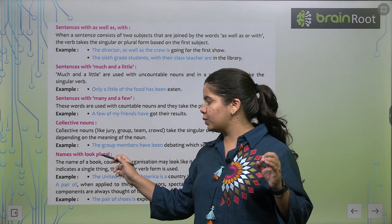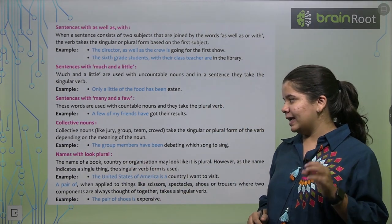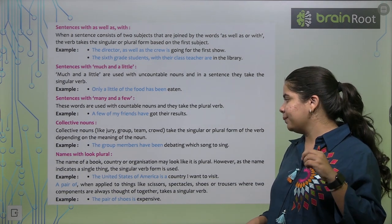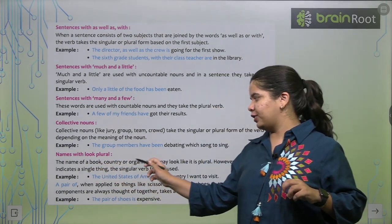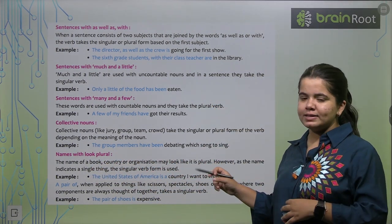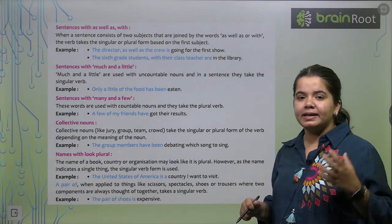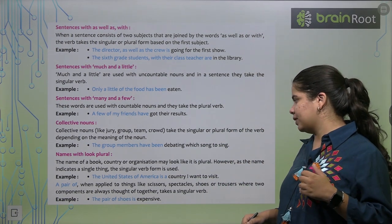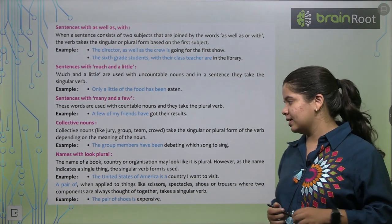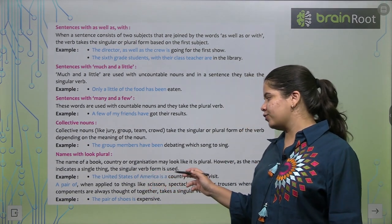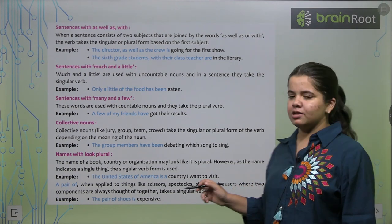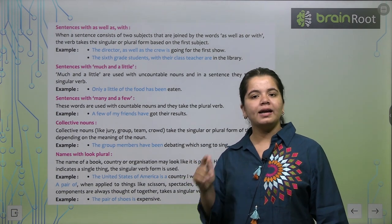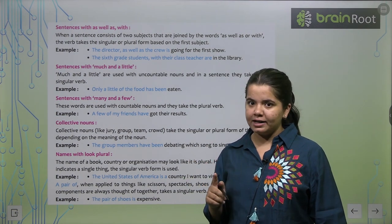Next is, names that look plural. Jo humare names hai, jo plural jaisi lagte hai. But woh hote singular hai. Unke saath hum kya use karte hai? The name of a book, country or organization may look like it's plural. Toh, kisi country ka naam, kisi book ka naam, dekhne mein may bhi aisa laghe ki woh plural hai. Par, asliyat mein woh singular hota hai. Toh, hum singular verb hi use karenge us ke saath. Jaise, the United States of America is a country I want to visit.